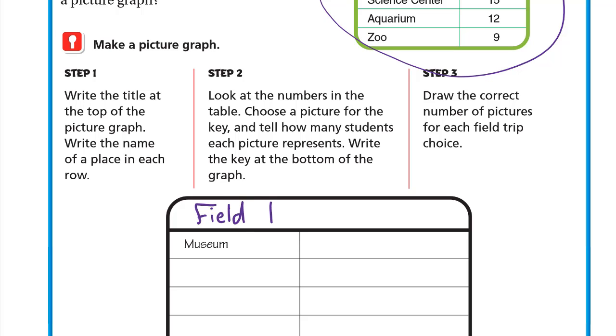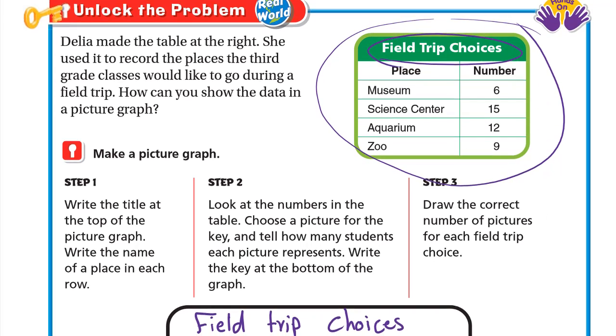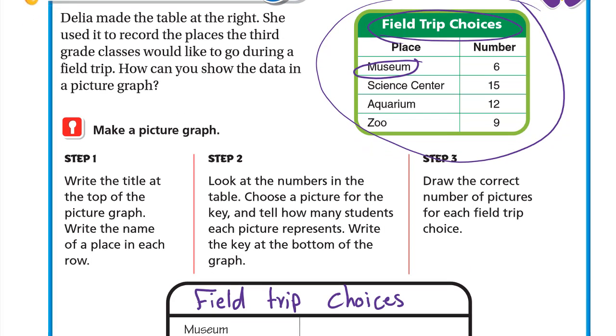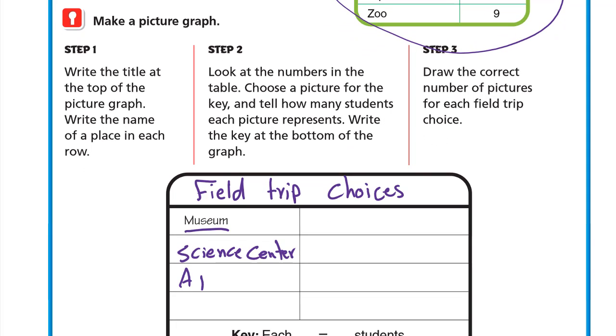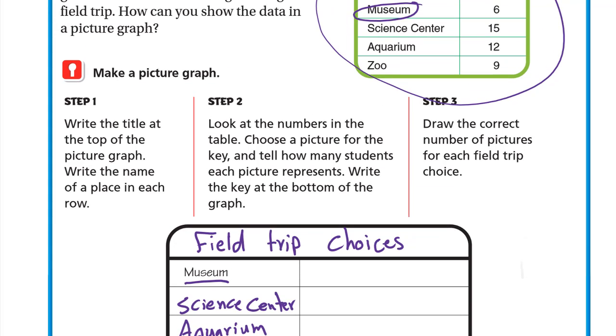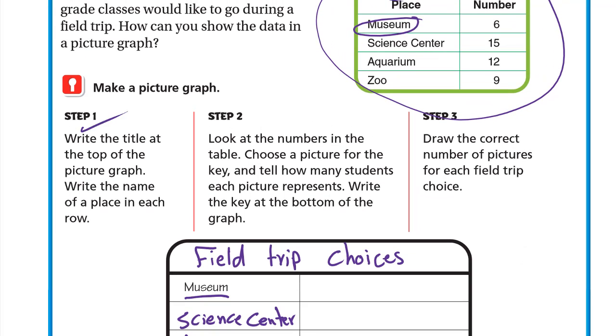Museum is already written, so here we write Science Center, then the Aquarium, and the last thing is the Zoo. Now we finished step number one. We wrote the title and we wrote the names.